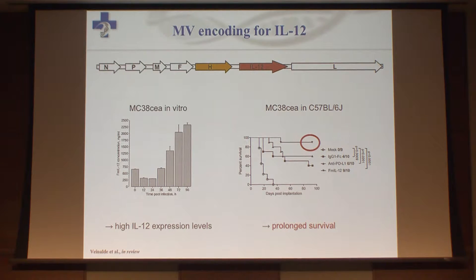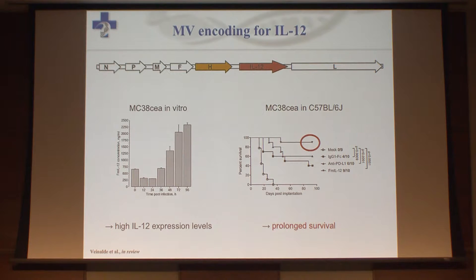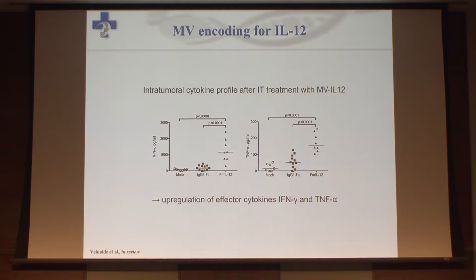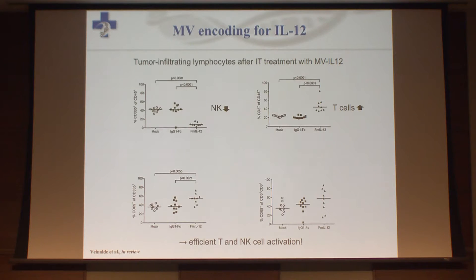We tried another cytokine, IL-12, which has been in clinical trials but is a dangerous substance when administered systemically. Our hypothesis was that local expression in the tumor environment mediated through the virus might reduce systemic toxicity. In terms of efficacy in mice, we haven't seen such a response with measles virus encoding IL-12 — close to 100% long-term remissions. We have high levels of protein in the supernatant of infected cells in the microgram range, and we could show an intra-tumoral cytokine profile with upregulation of effector cytokines including interferon-gamma and TNF-alpha in mice treated with the IL-12 virus.